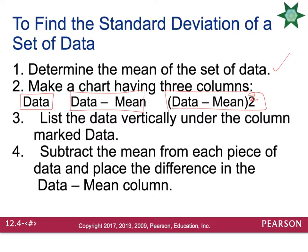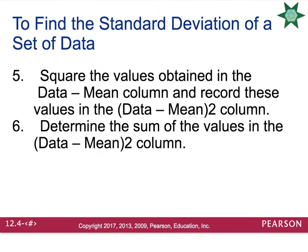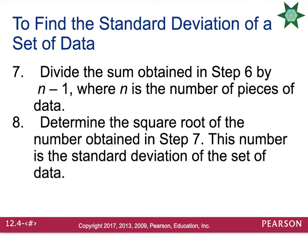List the data vertically under the data column. In the next column, subtract the average from each piece of data and place that in the data-minus-mean column. Then square that column and place the results under data-minus-mean-squared. Add up that last column, divide the total by n minus 1 (where n is the number of data points), and then take the square root. That result is your standard deviation.